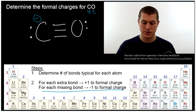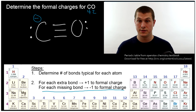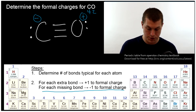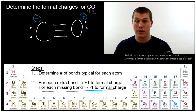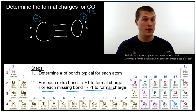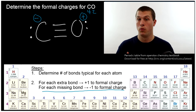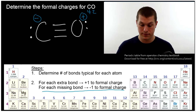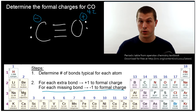On the other hand, oxygen, which wants two bonds, has three — so that gives it a plus-one formal charge; it's sharing more of its electrons than it wants to. This way we can really quickly just look at how many bonds each atom has and compare it to how many bonds it wants. Oxygen wants two, it has three — that gives it a plus-one charge. Carbon has three, it wants four — that gives it a minus-one charge.